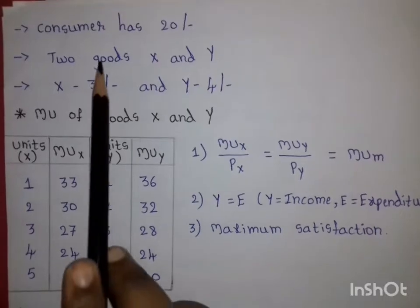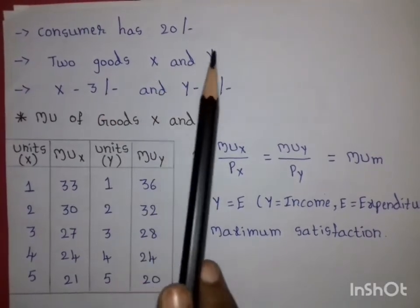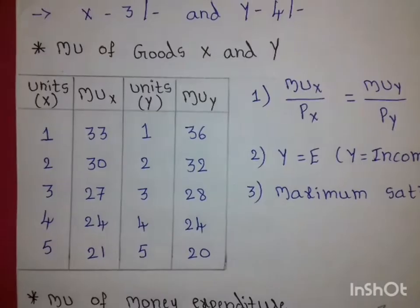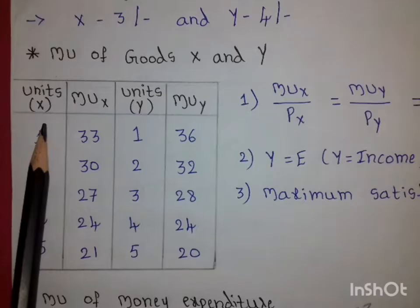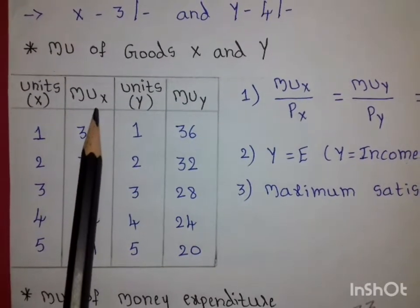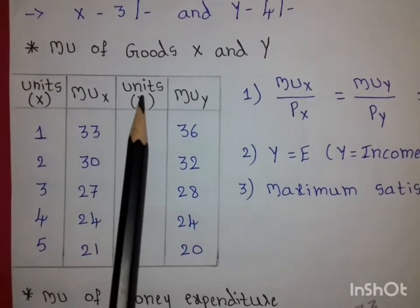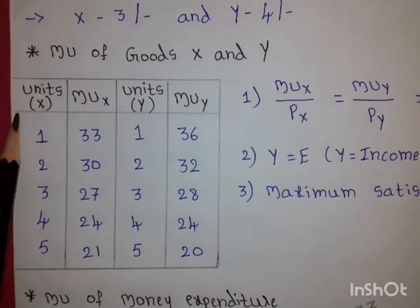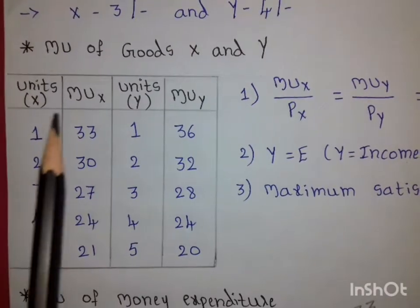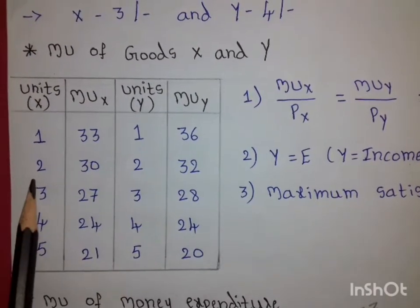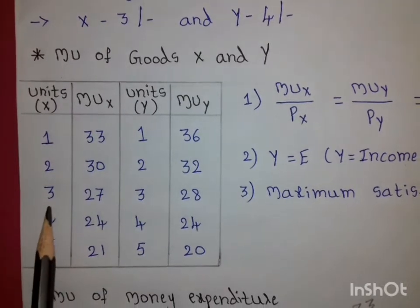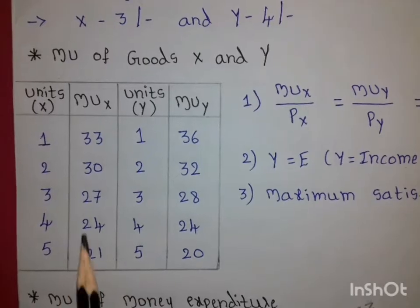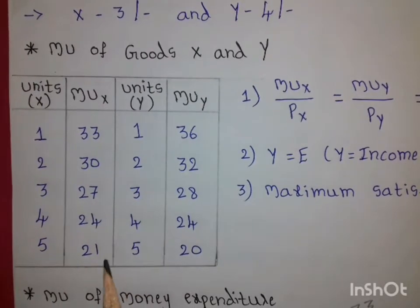For example, suppose a consumer has 20 rupees, and there are two goods X and Y. The price of good X is 3 rupees and the price of good Y is 4 rupees. In the table, MUx means marginal utility of good X and MUy means marginal utility of good Y. For good X, the marginal utilities are: 1 unit = 33, 2 units = 30, 3 units = 27, 4 units = 24, 5 units = 21 — marginal utility decreases as consumption increases.